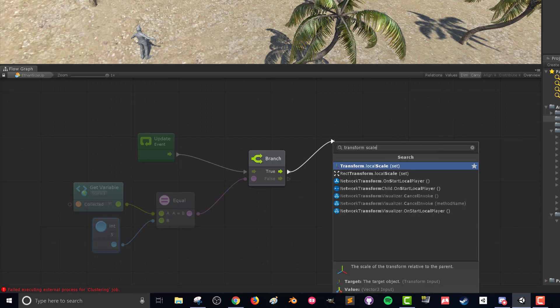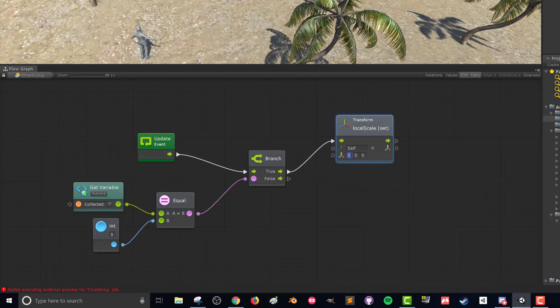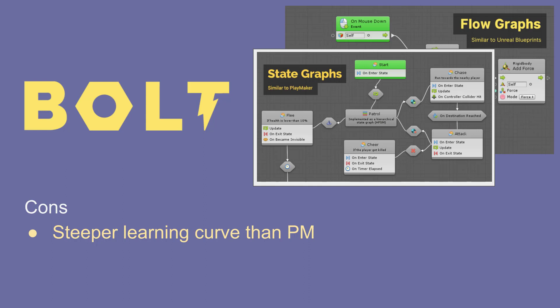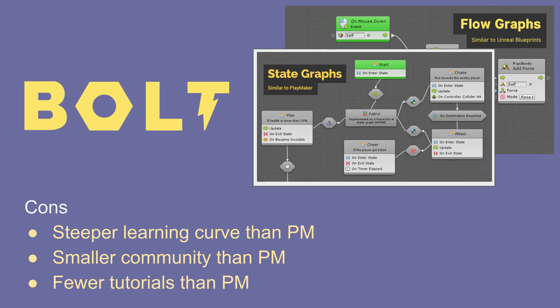Now let's look at the cons of Bolt. The big one is the steeper learning curve — there's no doubt that Bolt is a little bit harder to get going and get interactivity working in your Unity project than with Playmaker. The Bolt online community is definitely smaller than Playmaker's: fewer forums, less active, simply because it's newer. There is a fairly active Discord server, which is great for Bolt to have. And because Bolt is newer and less popular at the moment — I hope that changes — there are fewer tutorials than for Playmaker, and people are just beginning to work with it.